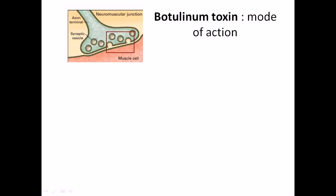There are neuromuscular junctions present in our body which control the movement of our muscles due to different stimuli. This is the neuron, this is the neuron ending, and this is the muscle. There is a place where the neuron and muscle are very close to each other, called the neuromuscular junction.